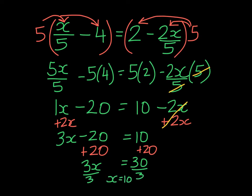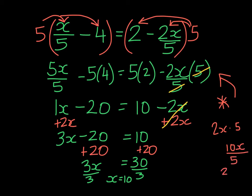Now, on the right-hand side, this canceling — I often get people asking, what happened there? You could multiply 2x times 5 and get 10x, and then in the denominator you have 5. This 10 fifths will simplify to give you 2x. So if you prefer to do it that way, you can.